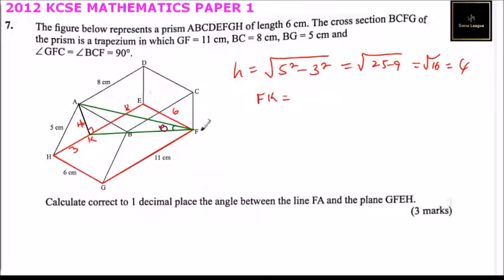KEF forms a right angle triangle, so FK equals the square root of 8 squared plus 6 squared, which is square root of 64 plus 36, which is square root of 100, and that will give you 10.